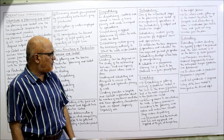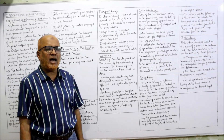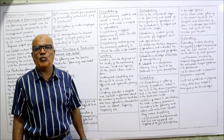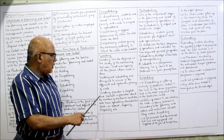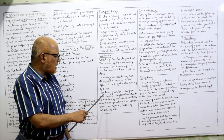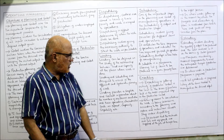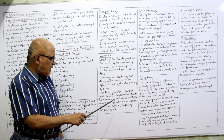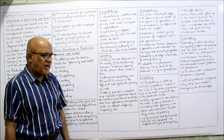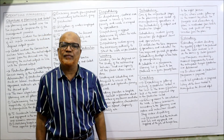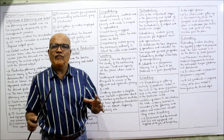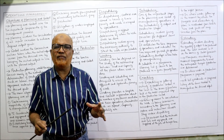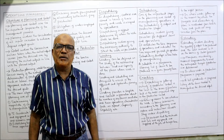Loading provides complete and correct information about the number of machines available and their operating characteristics such as speed, capacity, and capability. In the loading step, we find out what the capacity, capability, and efficiency of each machine is in order to proceed with production.